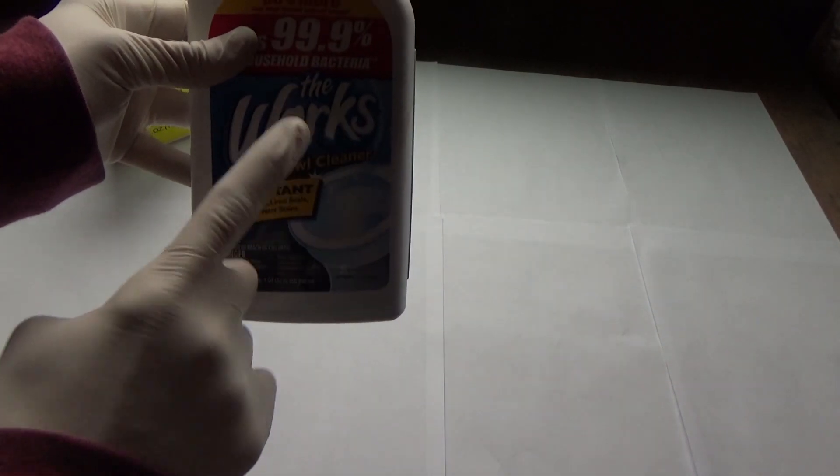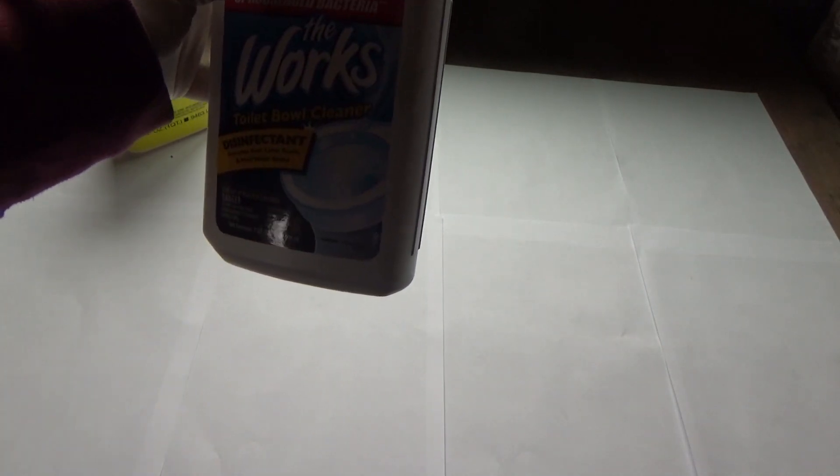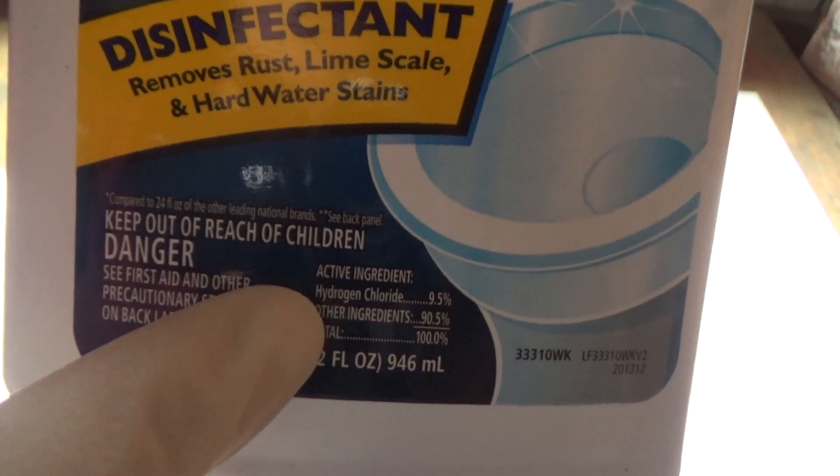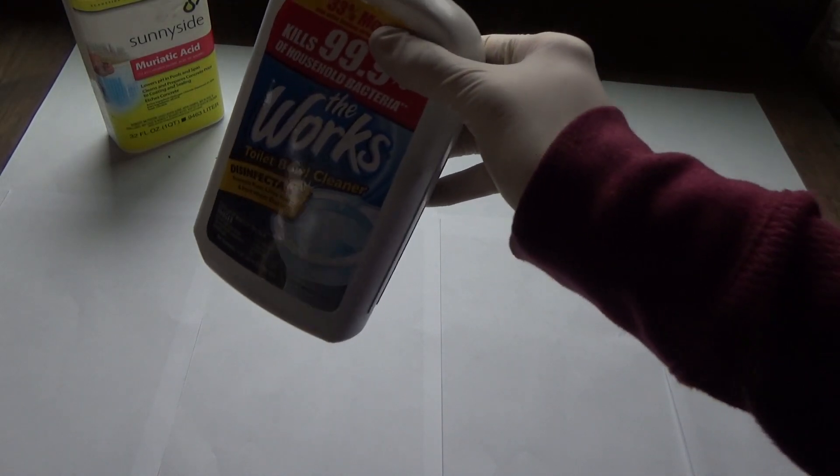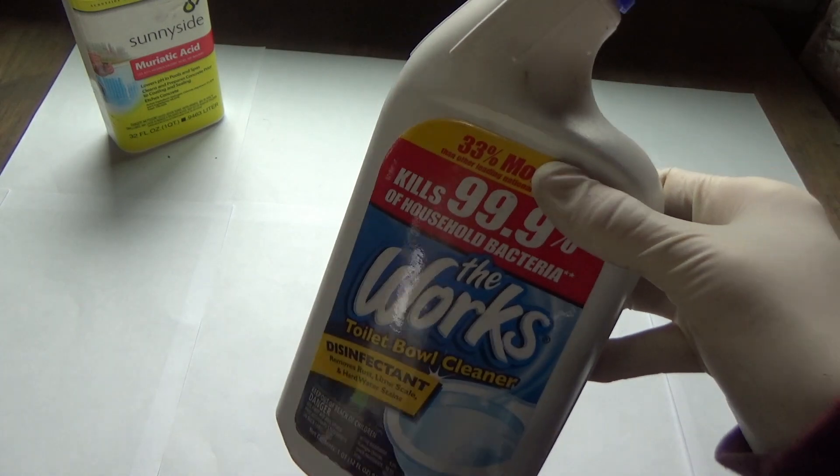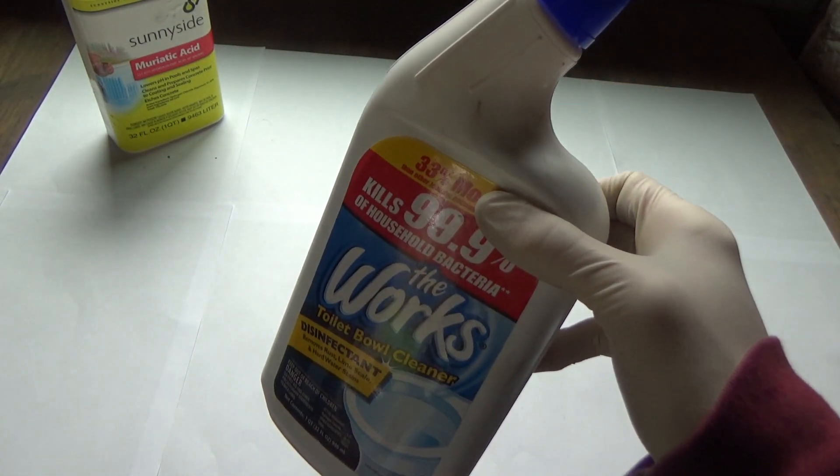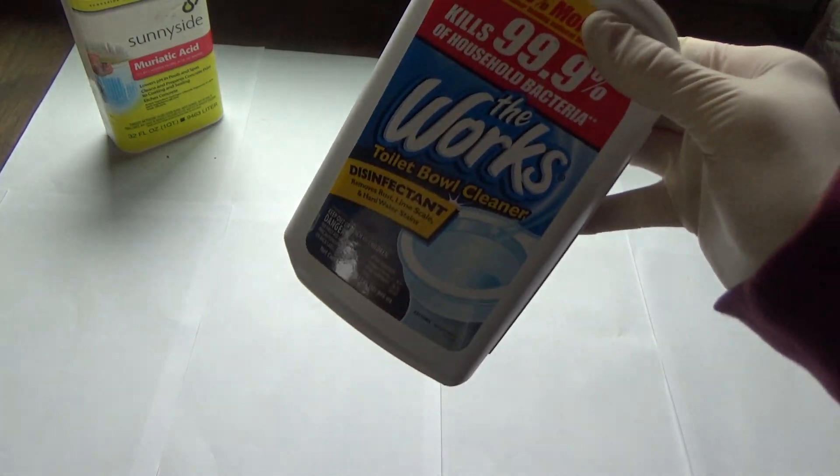If you don't have muriatic acid, which is just hydrochloric acid by the way, then sometimes these toilet bowl cleaners or cleaners in general might have hydrogen chloride in it. This only has 9.5%, while this is 31.45%. But some brands have up to 25% hydrochloric acid. The most I've ever seen in a store is 20%.